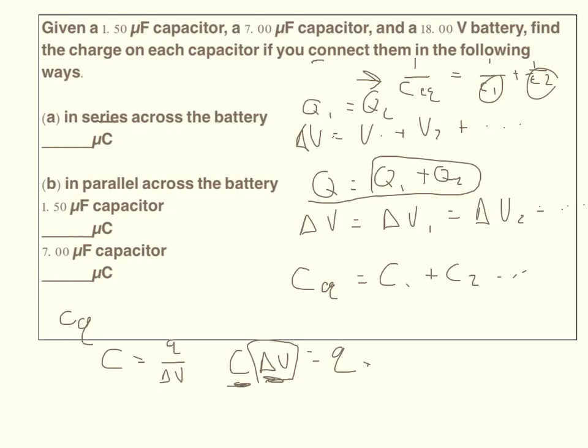So to find the capacitance, capacitance is going to be equal to 1 over, 1 over C1, which is 1.5, so 1 over 1.5, plus 1 over 7, all of that to the negative 1 power. So I'm taking all of this in the parentheses, and then I'm taking the negative 1 power of that, or the inverse of that, to get my capacitance.